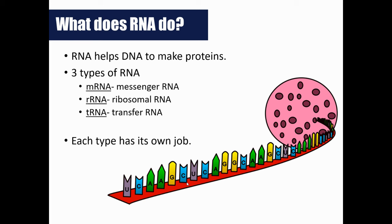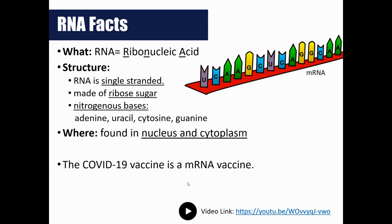RNA is going to help DNA make proteins, so they're both essential for living organisms — all living organisms contain both. In a future lesson we'll learn there are three types of RNA: mRNA (messenger RNA), rRNA (ribosomal RNA), and tRNA (transfer RNA), each with its own job. RNA stands for ribonucleic acid, and just like DNA, it's named after the sugar it contains. DNA contains the sugar deoxyribose; RNA contains the sugar ribose.